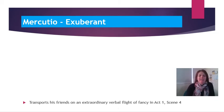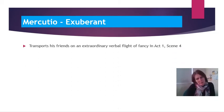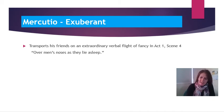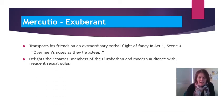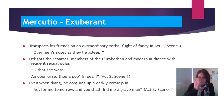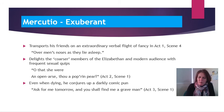Now let's take a look at Mercutio and the word I'm going to sum him up with is exuberant. Exuberant because in Act 1 Scene 4 he takes his close friends and the depressed Romeo on an extraordinary verbal flight of fancy, describing Queen Mab passing over men's noses as they lie asleep, influencing their dreams. Exuberant because of his frequent sexual quips which would delight the coarser members of the Elizabethan and modern audience. And exuberant because even when dying he conjures up the darkly comic pun: 'Ask for me tomorrow and you shall find me a grave man.'